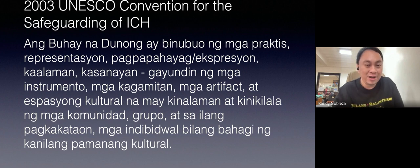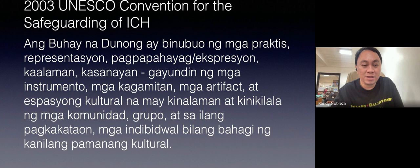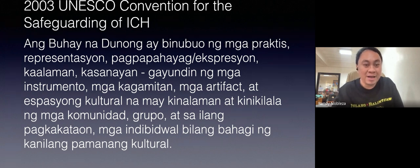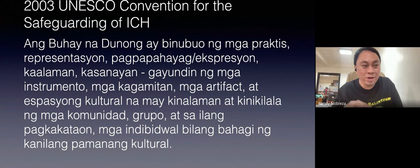Buhay na Dunong is defined as comprising practices, representations, expressions, knowledge, and skills, along with the instruments, tools, artifacts, and cultural spaces that communities, groups, and in some cases individuals recognize as part of their cultural heritage. You understand that culture and heritage are intricately intertwined. In Japanese language and culture, they also have their ICH, but our focus is the commonality between Japan and the Philippines — we draw on island studies and archipelagic studies, referencing Morion, Tubong, and Kalutang.